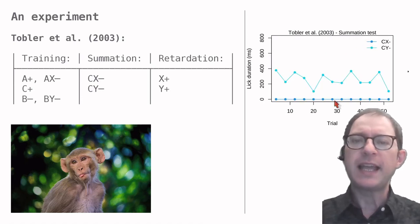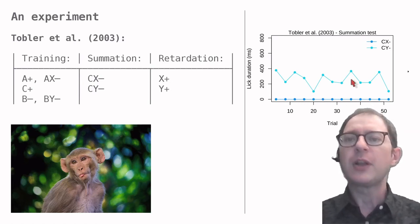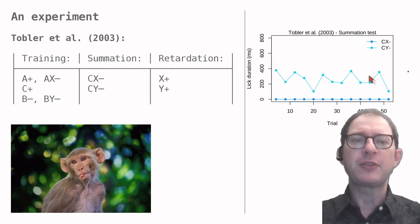The result was that X inhibited responding to C completely, as we can see from the complete absence of responding to C and X together. On the other hand, the monkeys responded quite a bit to C, together with the neutral stimulus Y. In other words, X passed the summation test by being able to inhibit responding to a stimulus that had independently been trained as an exciter.